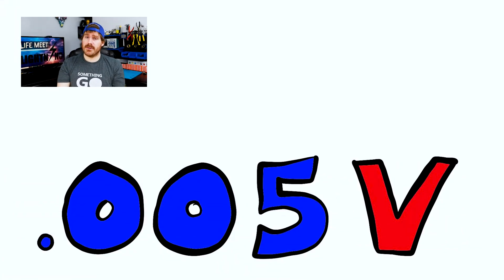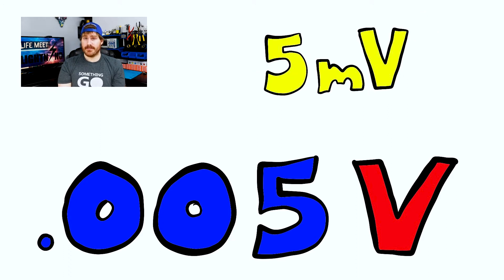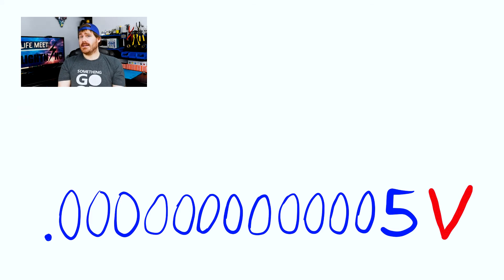Metric prefixes are always used with a unit of measure, which is why we call them prefixes. Say we're working with .005 volts — this quantity can be expressed in engineering notation as 5 times 10 to the power of negative 3. Using a metric prefix, we can write this quantity as 5 millivolts. You might be thinking: why even use metric prefixes? Why not just write .005 volts? Well, the whole reason we use engineering notation is to make it easier to work with very large and very small numbers. What if this was the voltage we were working with? Not as easy now, right?